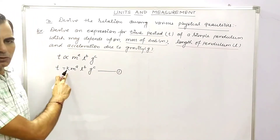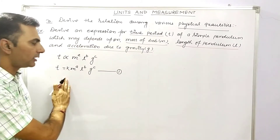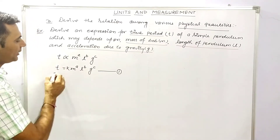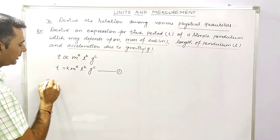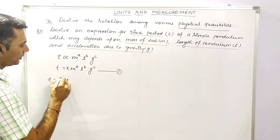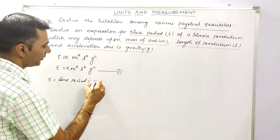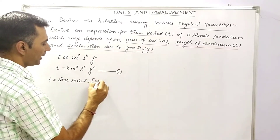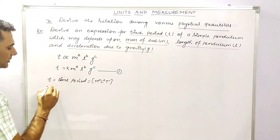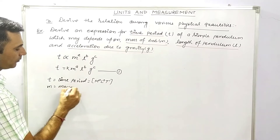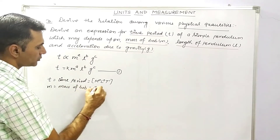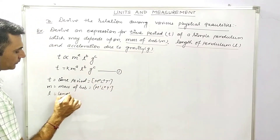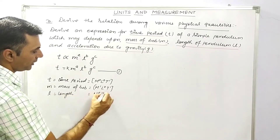Therefore, T equals k times m raised to power a, l raised to power b, g raised to power c — this is equation number 1 — where k is the proportionality constant. Now we write the dimensional formulas: T has dimensions M⁰L⁰T¹, mass m has dimensions M¹L⁰T⁰, length l has dimensions M⁰L¹T⁰.